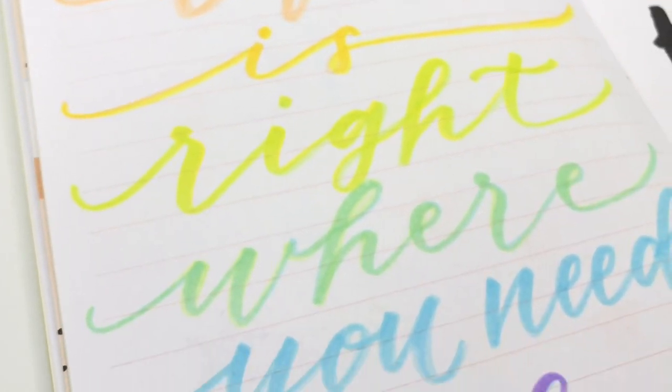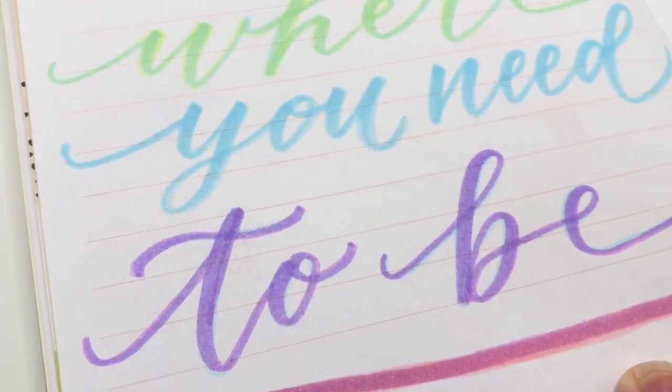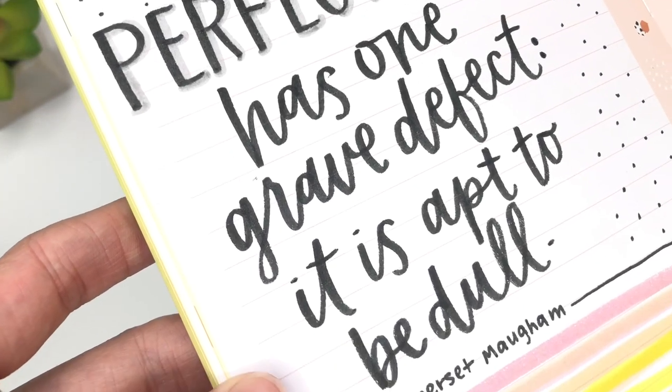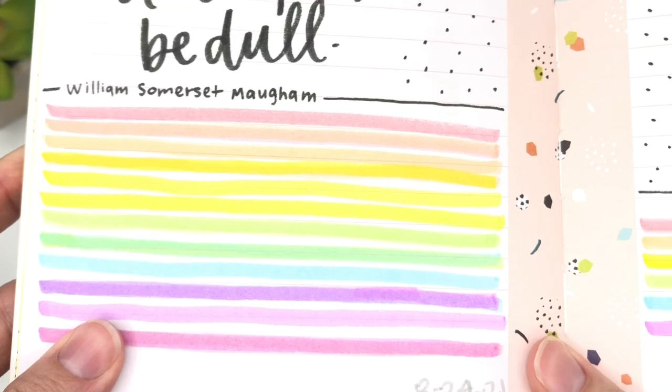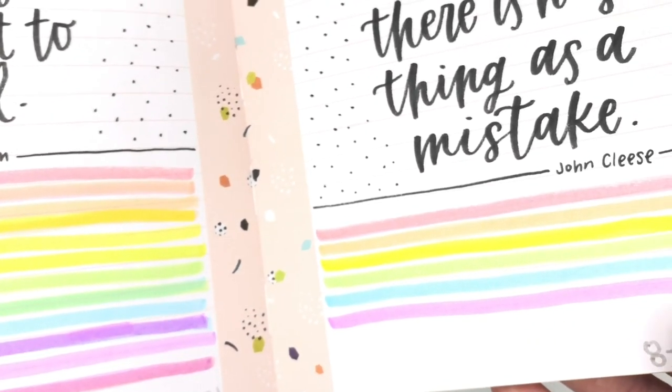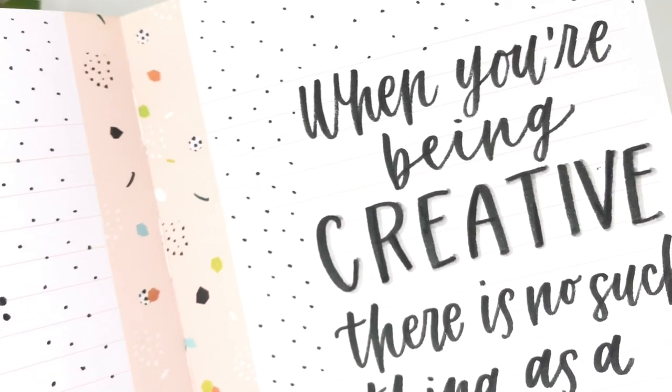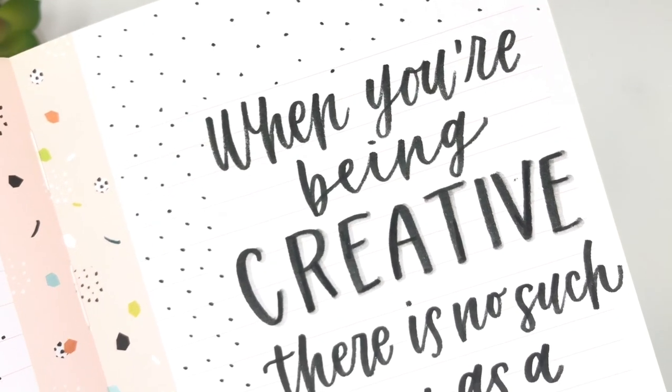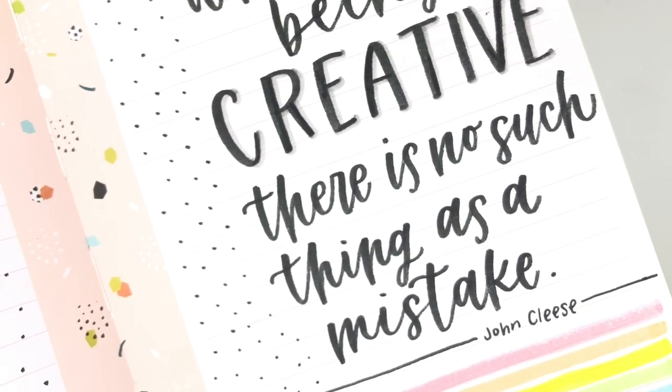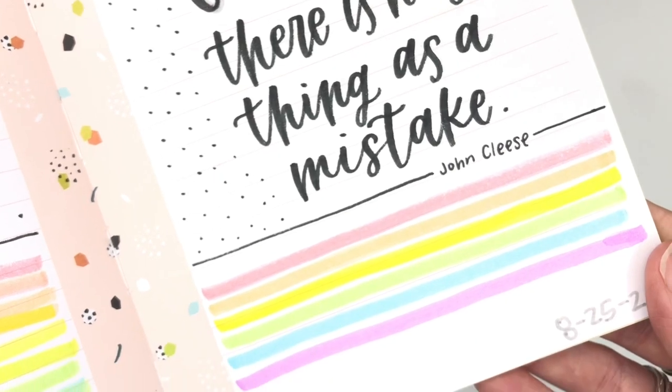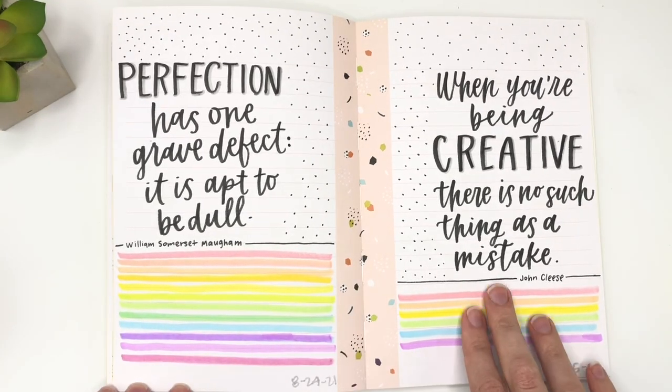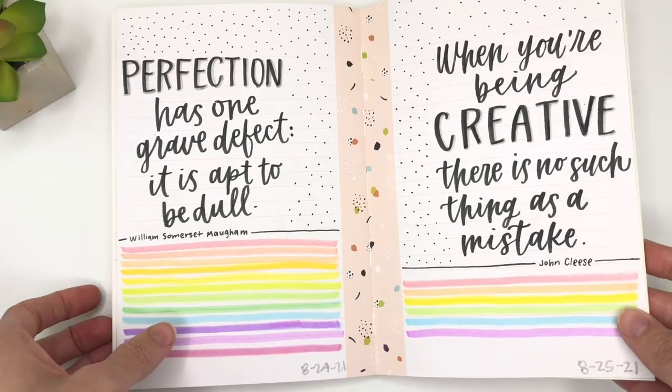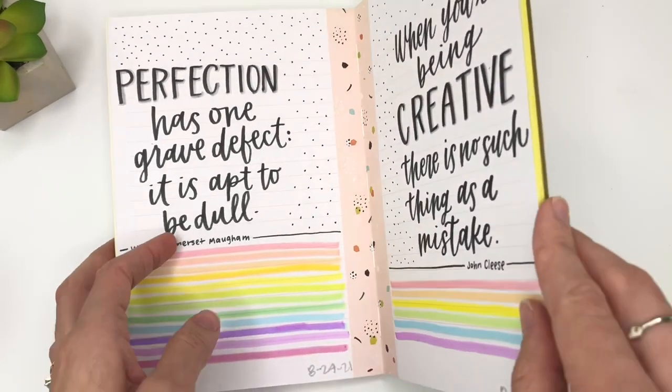Going back to my journal, there are a couple quotes that I wanted to show you. So this one, perfection has one grave defect. It is apt to be dull. And I just thought it was so perfect with this idea of making mistakes. And then this one as well, when you're being creative, there's no such thing as a mistake. As a recovering perfectionist, I love that lettering, especially in this journal, has helped remind me to lean into the imperfections.